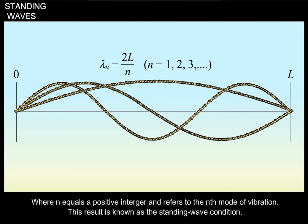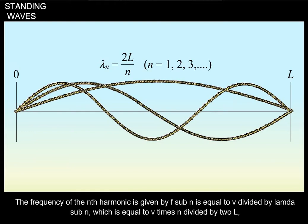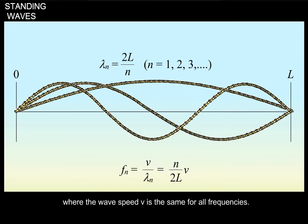This result is known as the standing wave condition. The frequency of the n-th harmonic is given by f sub n equals v divided by lambda sub n, which is equal to v times n divided by 2L, where the wave speed v is the same for all frequencies.